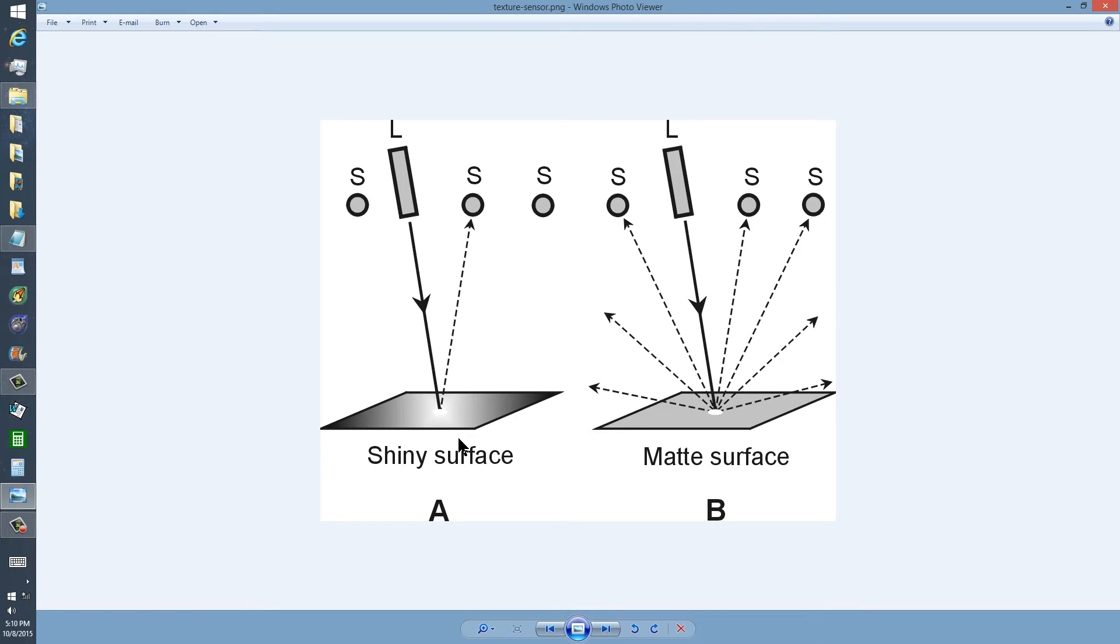A shiny surface is something like a mirror or a shiny piece of metal, like a brand new car all waxed and polished. And a matte surface is something like a white piece of paper.